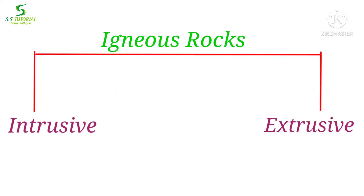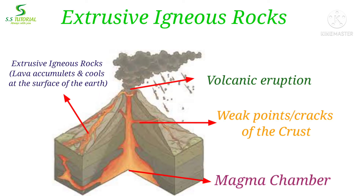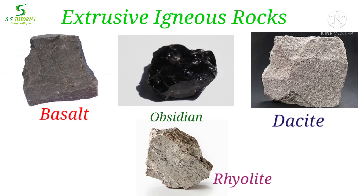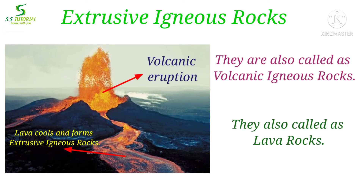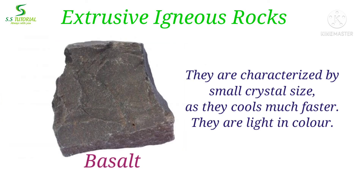On the basis of place of origin, igneous rocks can be classified into 2 types: intrusive igneous rocks and extrusive igneous rocks. When magma comes out in the surface of the earth through weak points or cracks of the crust, then over time magma slowly cools, crystallizes and solidifies, and forms rocks. Then they are called as extrusive igneous rocks. Basalt, obsidian, dacite, rhyolite etc. are examples of extrusive igneous rocks. They are also called as volcanic igneous rocks, and sometimes called as lava rocks as they are made up of lava. Extrusive igneous rocks are characterized by small crystal size as they cool much faster. They are light in color.